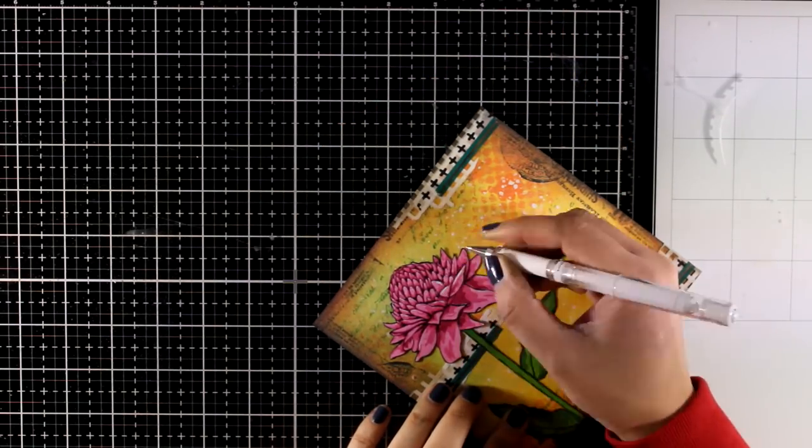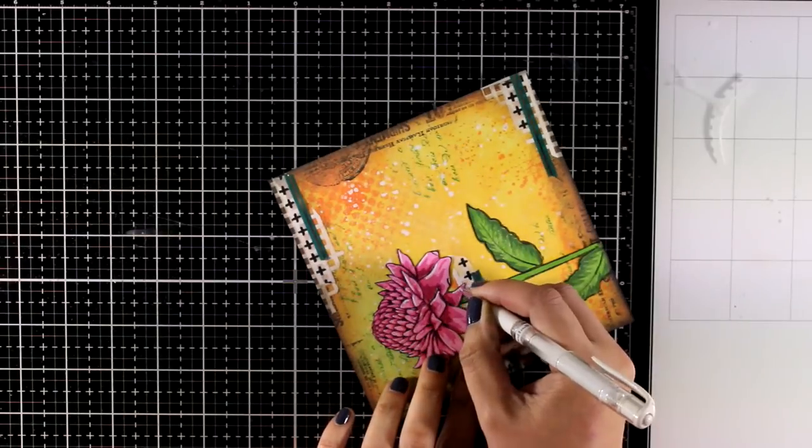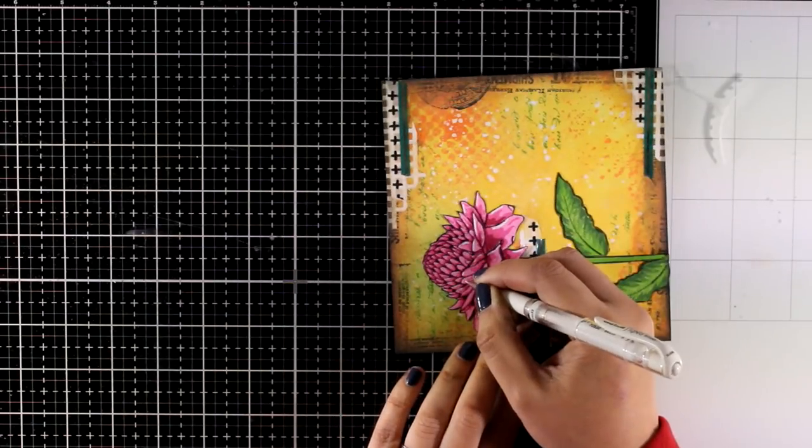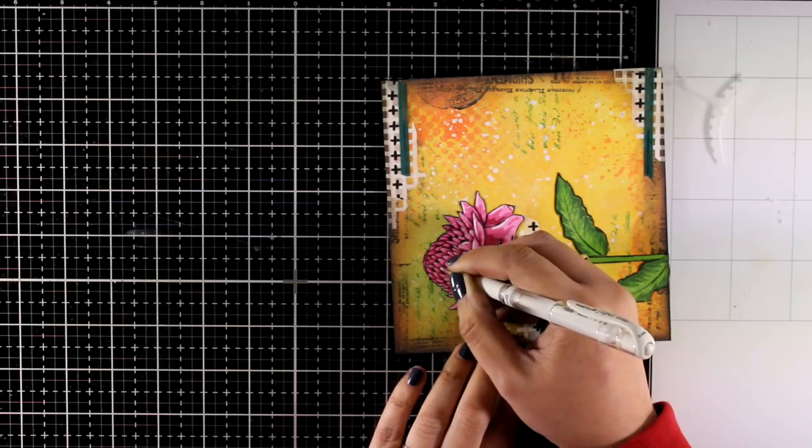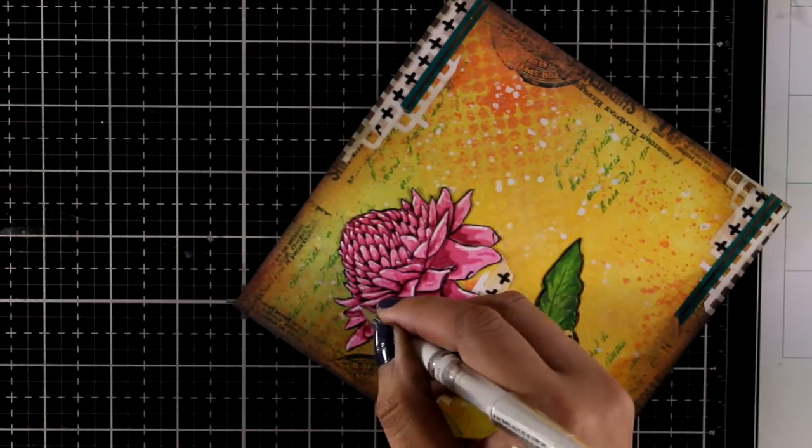Now it's time for my white gel pen, adding highlights here and there. Shadows and highlights really bring your focal points to life—they make them look dimensional and it's a lovely touch that I always like to do.